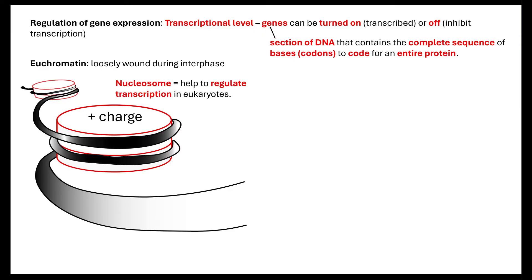What causes that tightly wound DNA structure? That's known as a nucleosome. A nucleosome is our histone proteins with our DNA wrapped around it. DNA is negatively charged, and the nucleosome is the DNA wrapped twice around this histone protein. The histone protein is positively charged, and that is what causes them to be attracted to each other. A nucleosome is one histone protein with the DNA wrapped around it twice, and that is a way in which we can regulate transcription.